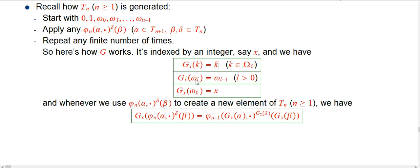If you collapse one of the omegas that's bigger than omega 0, you just go to the smaller omega. So omega l, if l is greater than 0, is omega l minus 1.